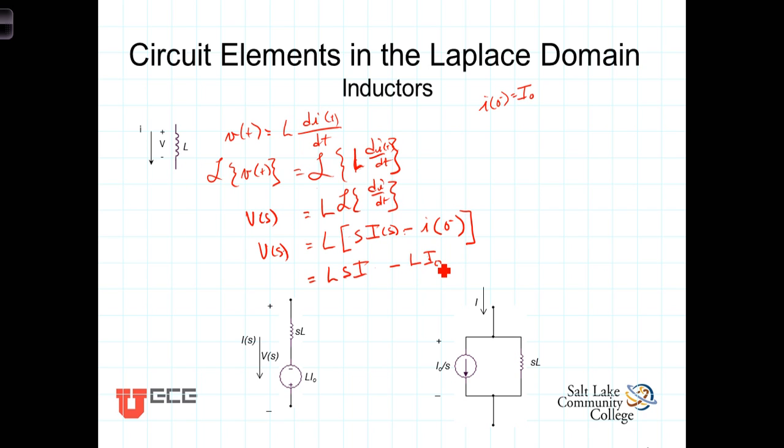In representing the inductor in the Laplace domain, we end up with two terms. The voltage across the inductor, shown here, plus to minus V of S, is equal to Ls times the current flowing through it minus L I naught.